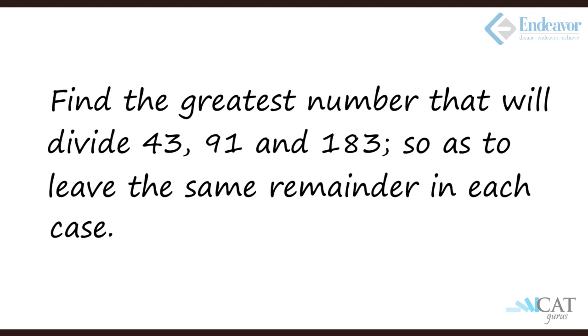Find the greatest number that will divide 43, 91, and 183 so that they leave the same remainder in each case. Now we don't know the numbers. We just know that they leave the same remainder. What is the remainder? We don't know. So can we look at it the other way?